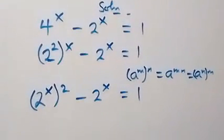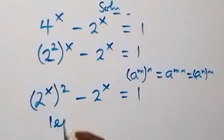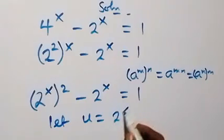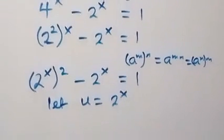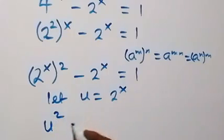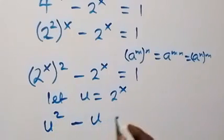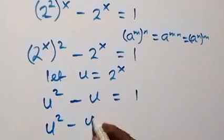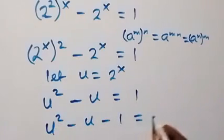The next step, we have 2 raised to power x, so let the letter u be equal to 2 raised to power x, such that we have this equation written in terms of u. This is u squared minus u equals to 1, and we can take 1 to this side to form a quadratic equation. So we have u squared minus u minus 1 equals to 0.